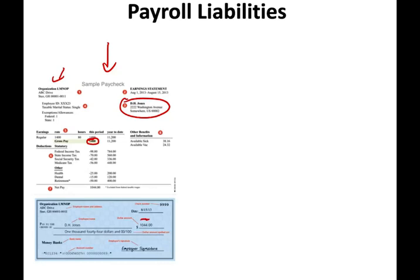D.H. Jones walked away with only $1,044. So what happened between $1,400 and $1,044? The employer is required to withhold certain taxes. For example, they withheld $98 for federal income tax, $70 for state, $42 for Social Security, and $56 for Medicare. Those are mandatory deductions. The employee also participated in the health insurance program, paying $25, plus dental insurance and retirement contributions. After all those deductions, D.H. Jones walked away with $1,044 in net pay.